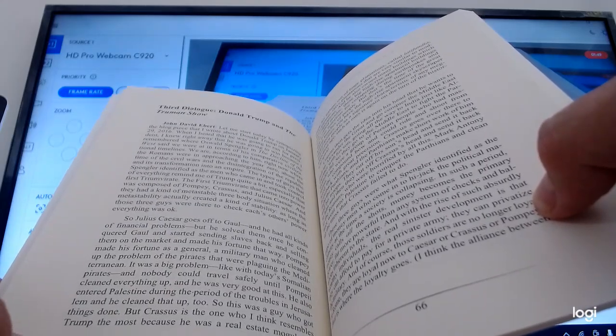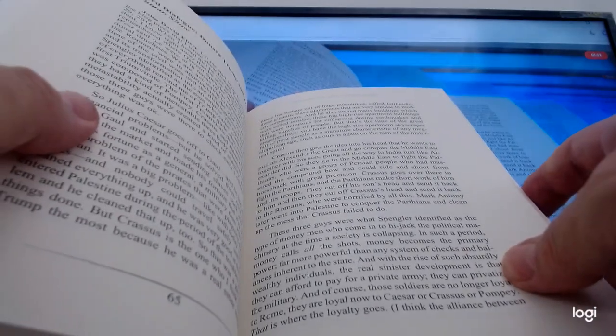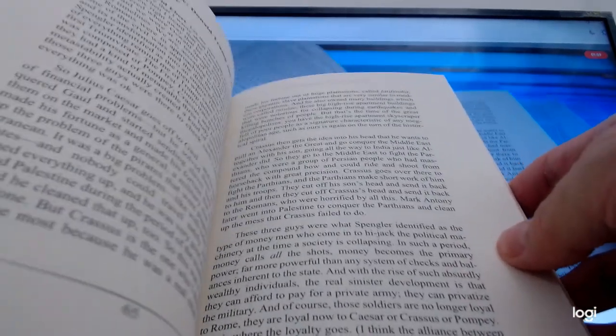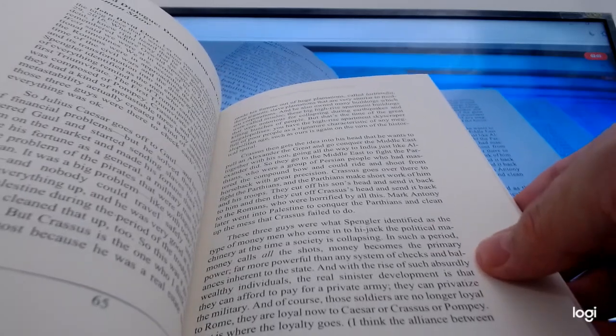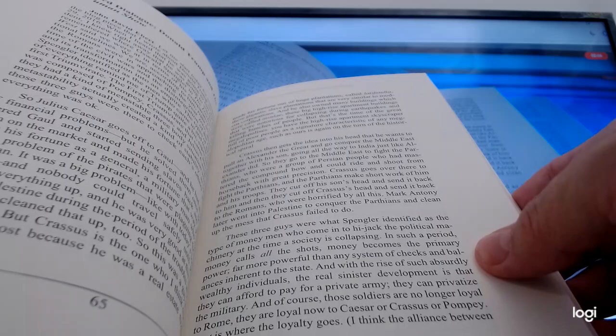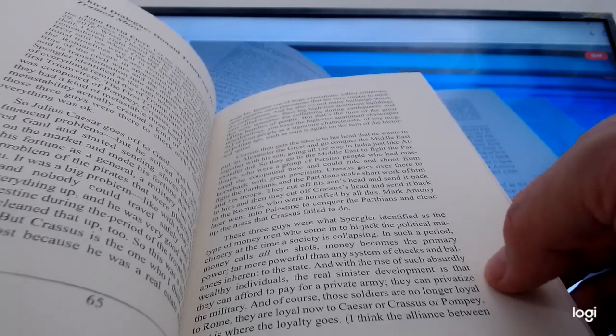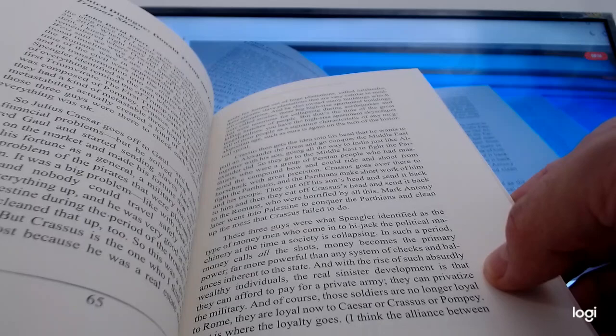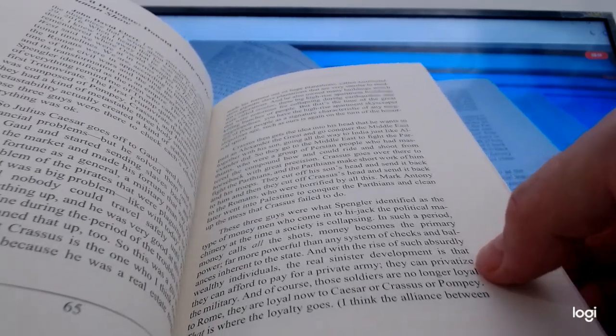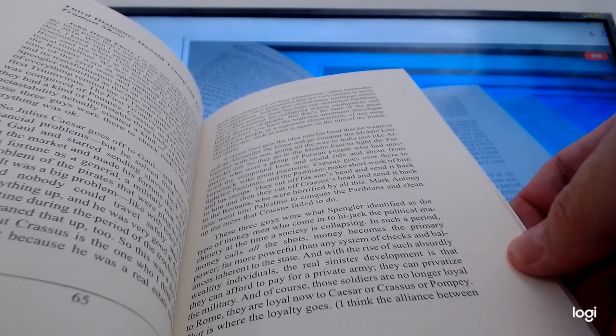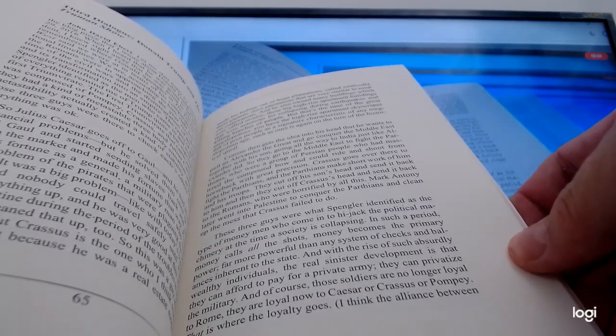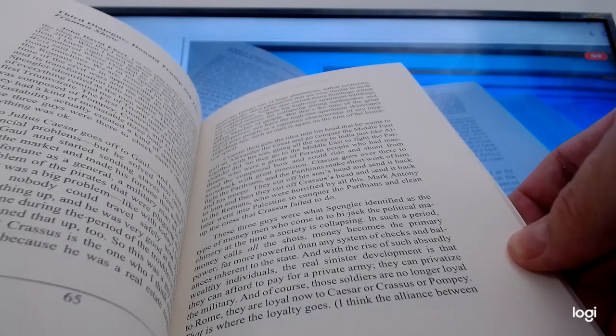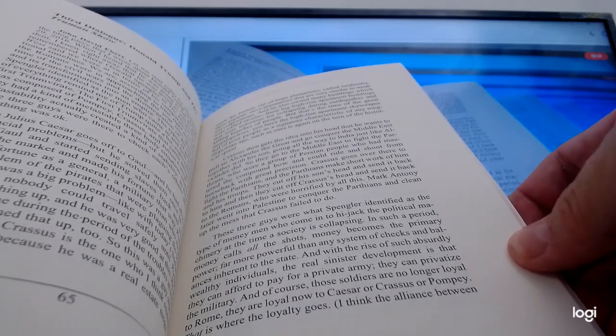But Crassus is the one who I think resembles Trump the most because he was a real estate mogul who made his fortune out of huge plantations called Latifundia, these gigantic slave plantations that are very similar to modern corporations. And he also owned many buildings called Insulae, these big high-rise apartment buildings that were notorious for collapsing during earthquakes. That's the time of the Great Megalopolises with the high-rise apartment skyscraper full of poor people as a signature characteristic of any Megalopolitan age.